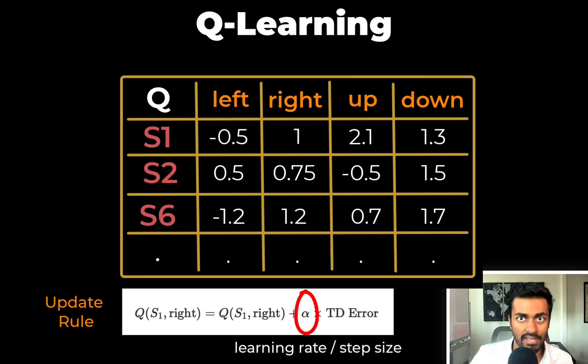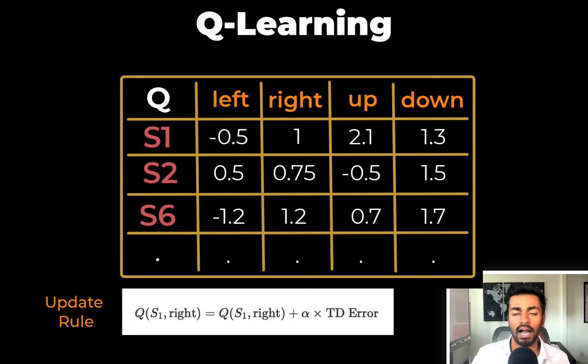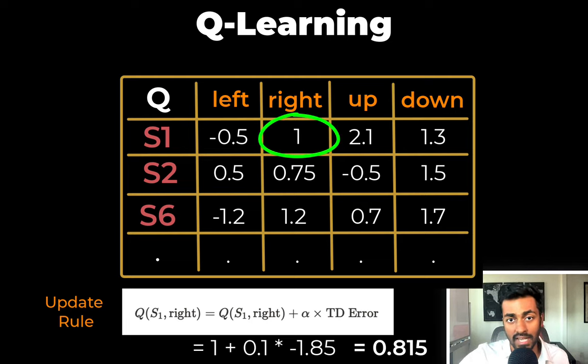We now update the Q value in the table based on the formula that looks like a gradient update rule. And here, alpha is going to be the step size or the learning rate, so to speak. And it defines how much in every time step are we willing to change these Q values. Higher the value, faster learning because bigger the updates. So in this case, let's also just take it to be some 0.1. And plugging in these values, we get 1, which is the expected value, plus 0.1 times the error, which is negative 1.85. And then doing the math, you will get 0.815 as the final result. And so we update this single Q value in the table from 1 to 0.85. And this is the end of our first time step.